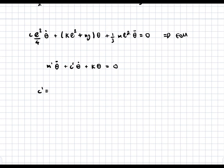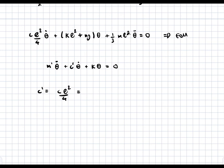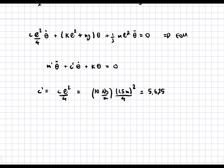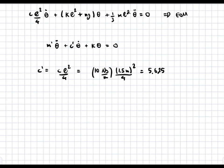So c' is the coefficient in front of the theta-dot term, which is c·l²/4. Plugging in: c = 10 N·s/m and l = 1.5 m, so c' = 10 × (1.5)² / 4 = 5.625. Then k' is the coefficient in front of the theta term, which is k·l² + m·g.